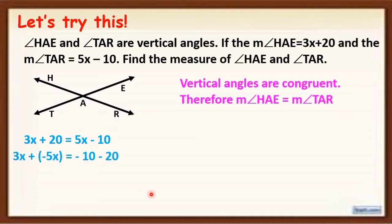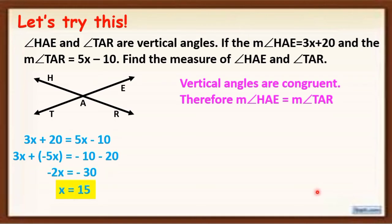Simplify: 3x minus 5x equals negative 2x, and negative 10 minus 20 equals negative 30. Divide both sides by negative 2 to isolate x. Therefore, the final answer is x is equal to 15. Since we already found the value of x, let us substitute it to the given measures.